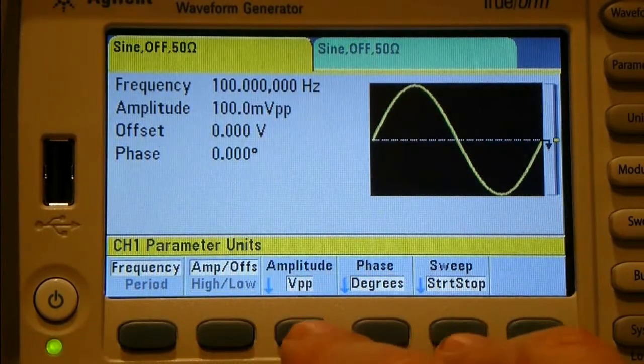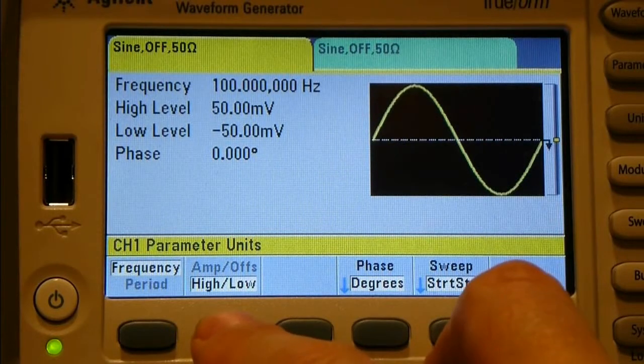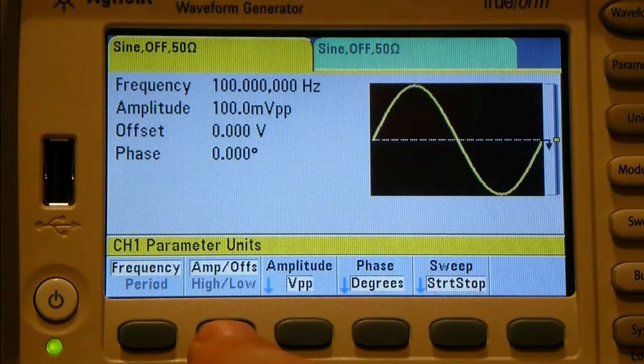If you don't have to do the math, you can just flip to high-low and actually just set how much above and how much below without having to work out the peak-to-peak or anything like that. Let's just go back to amplitude offset.